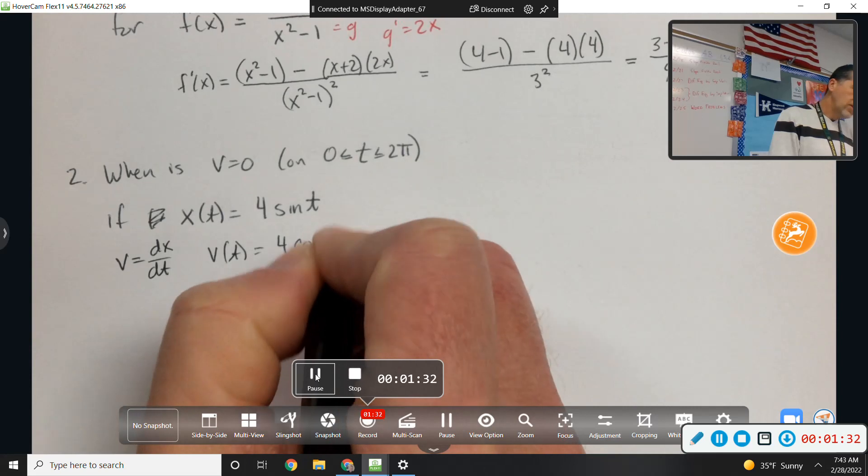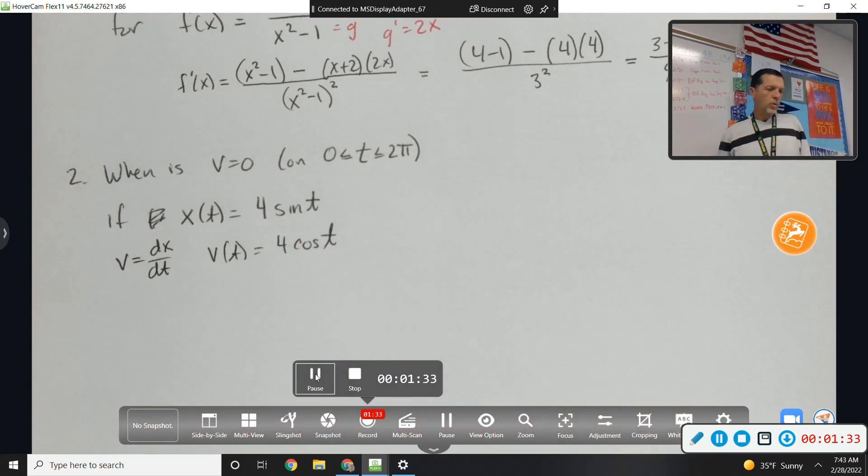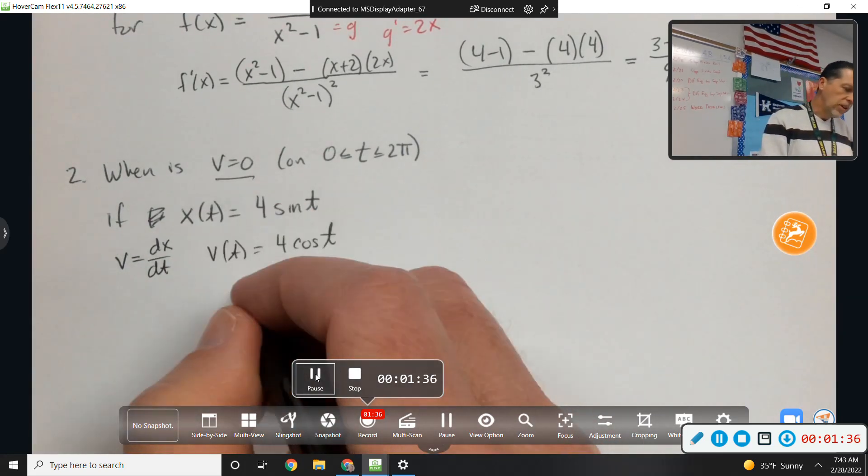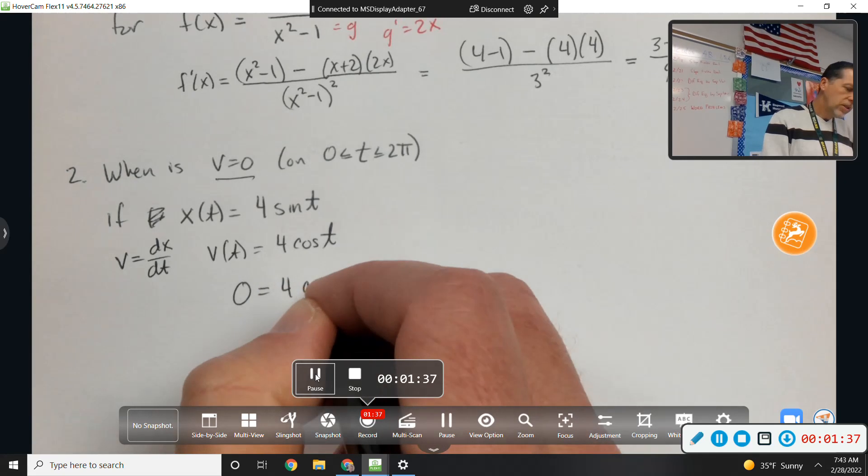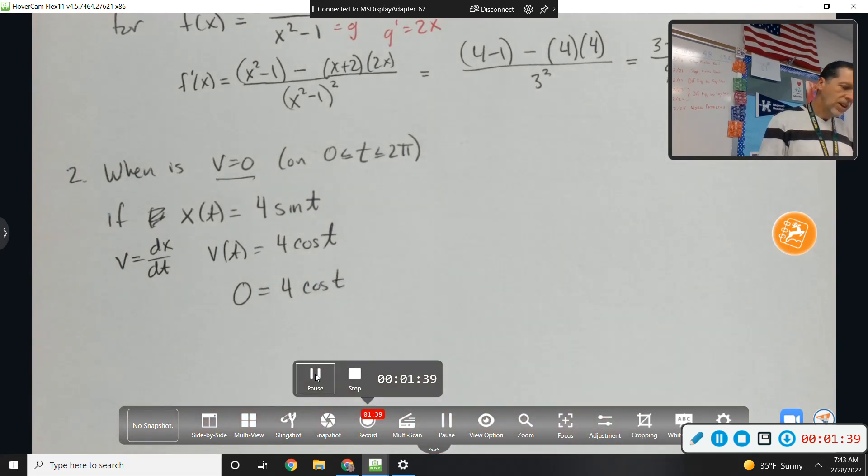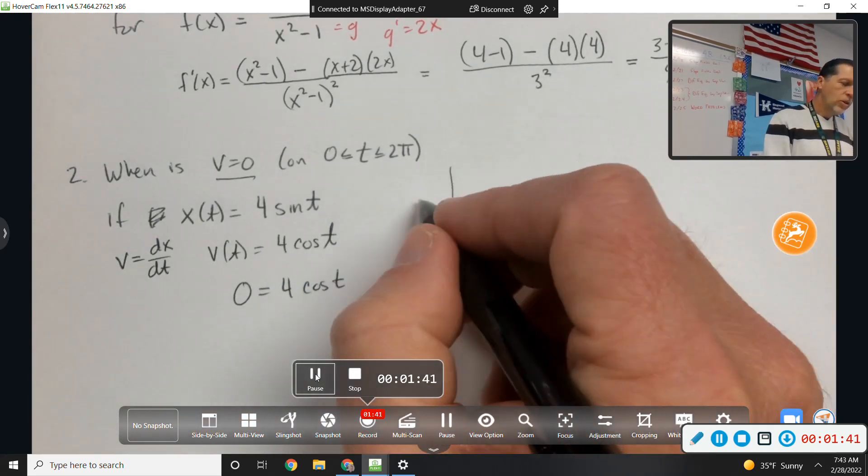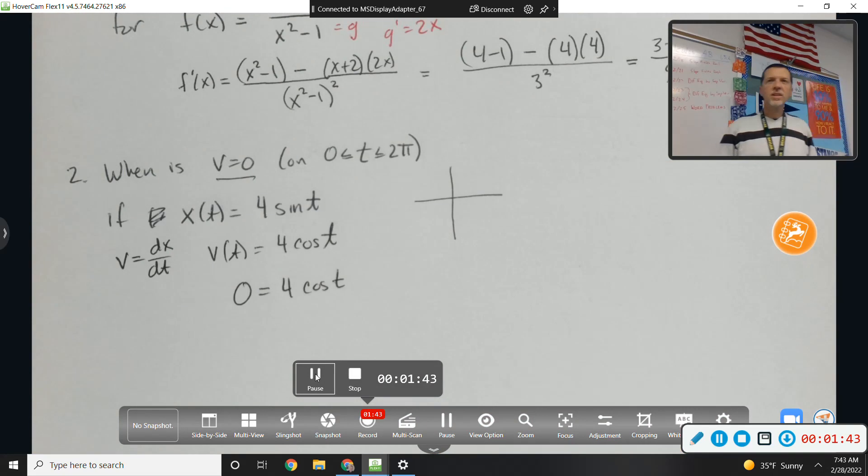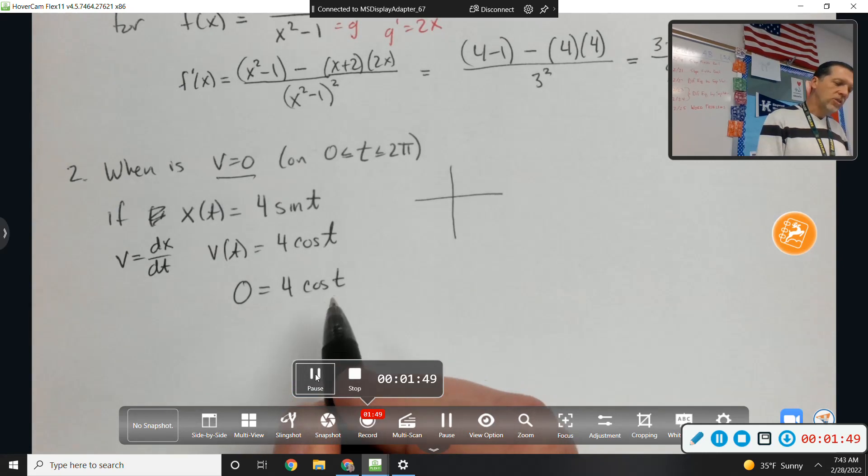So 4 cosine t. And then when is v equals 0, so 0 equals 4 cosine t. So unit circle experts, when or what angles have a cosine of 0?